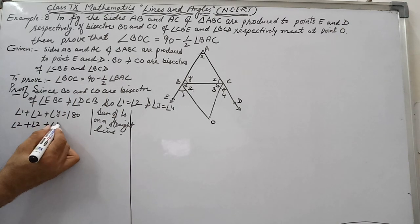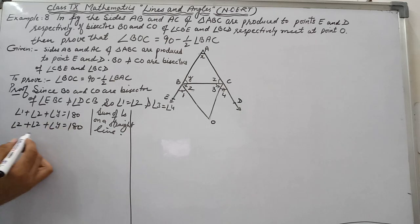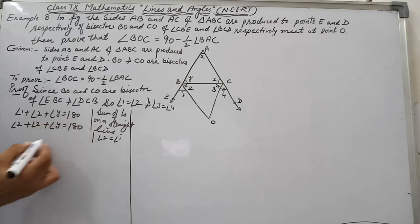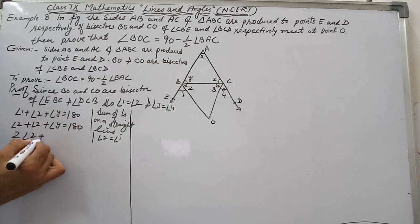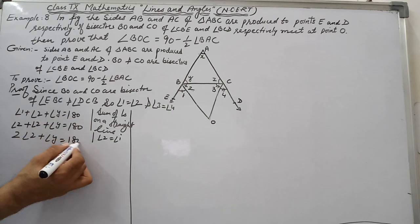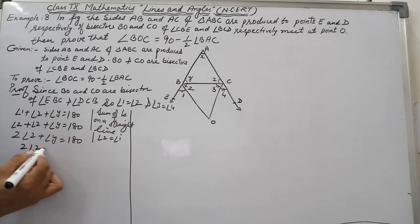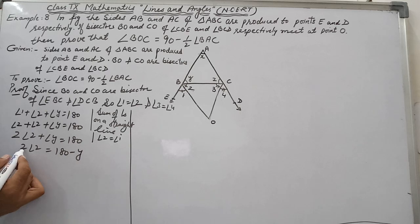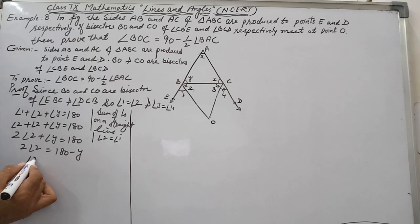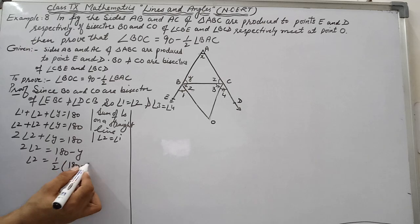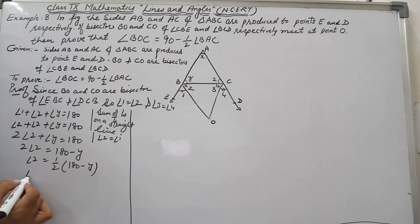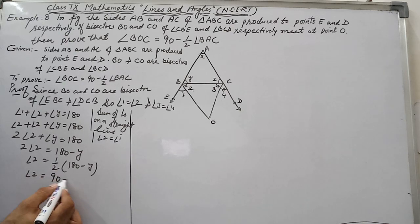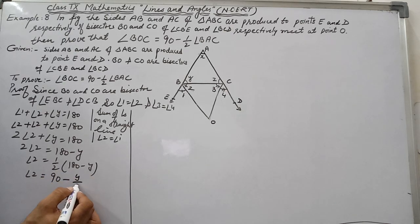So angle 2 plus angle 2 plus Y equals 180, which gives 2 angle 2 plus angle Y equals 180. Therefore 2 angle 2 equals 180 minus Y, so angle 2 equals half of (180 minus Y), which is 90 minus Y over 2. Call this Equation 1.